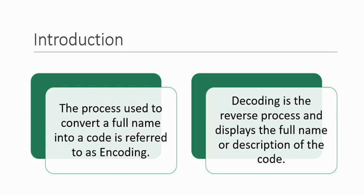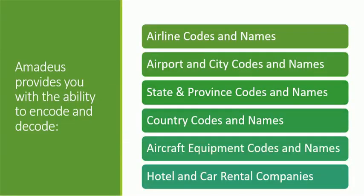We will be working on both of them one by one. Amadeus helps you to encode and decode airline codes and names, airport and city codes and names. It also provides encoding and decoding of state and province codes, country codes, aircraft equipment codes, and hotel and car rental companies.